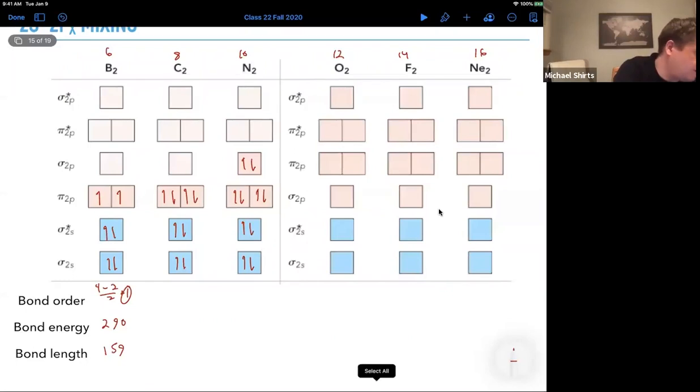So, for carbon, we have six in bonding minus two in antibonding divided by two. So, that would be a bond order of two. So, carbon two would have carbon double bond and then they would each have two lone pairs. The bond energy is 620.